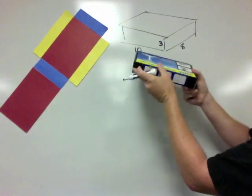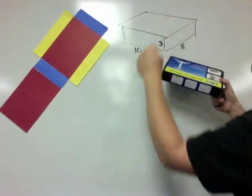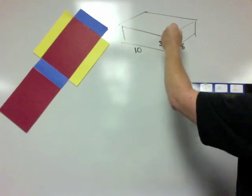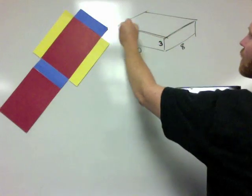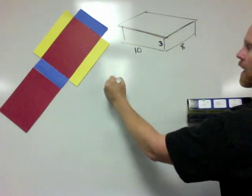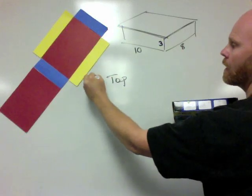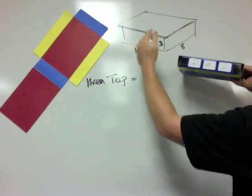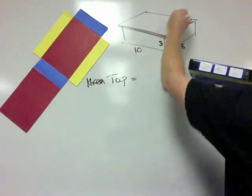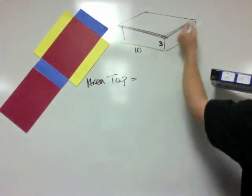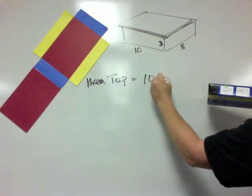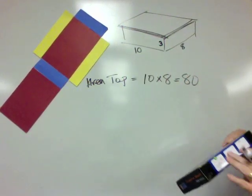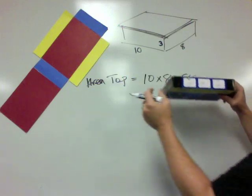So let's begin by finding the area of this top. And the area of this top is going to be found by multiplying the length and the width of the top. So the area of the top, the length of this top is 10, the width is 8, so it's a 10 by 8, which is 80 units squared. 80 square units is the area of the top.